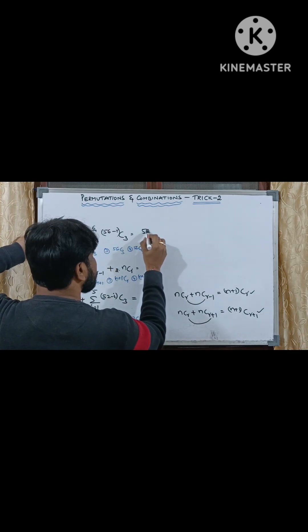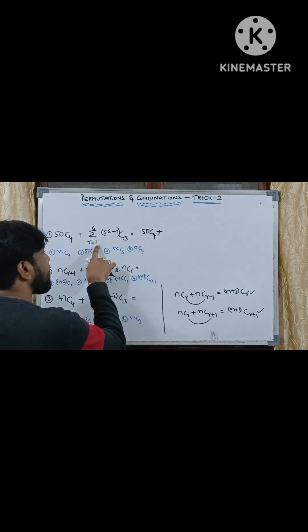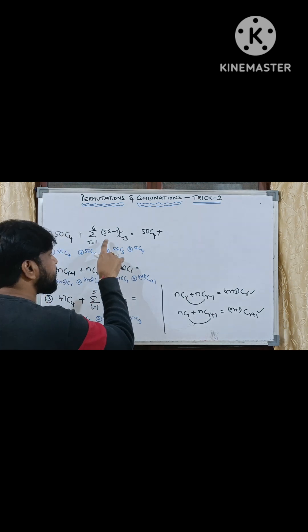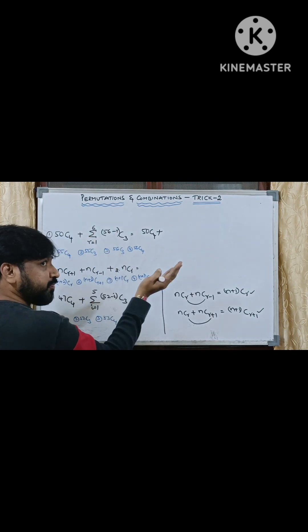Look carefully. So this is what 50C4 is given, plus the summation of R is running from 1 to 6, 56 minus R C3 is given. So this means R is running from 1 to up to 6. I am going to write in the reverse order.